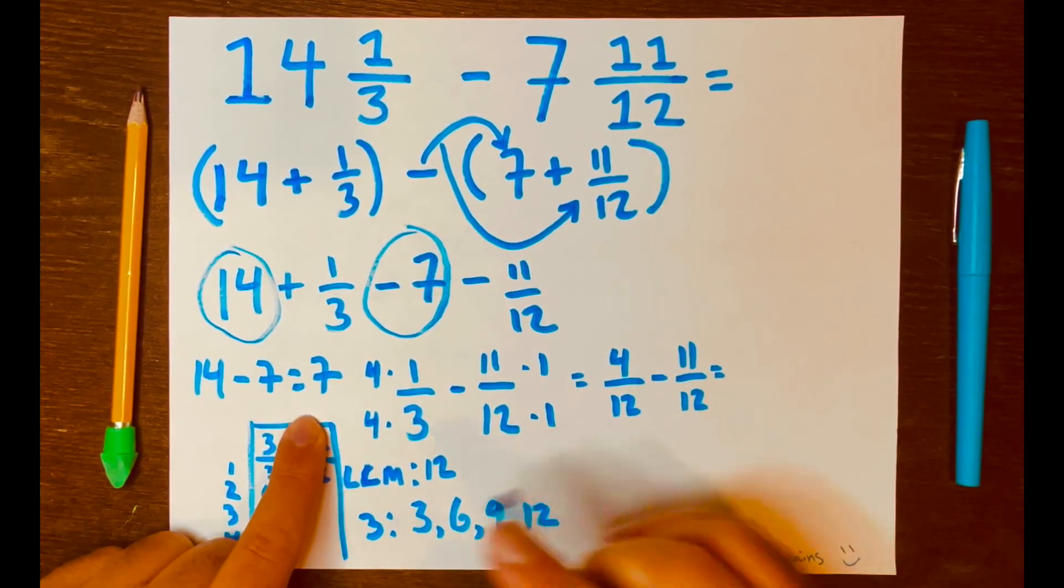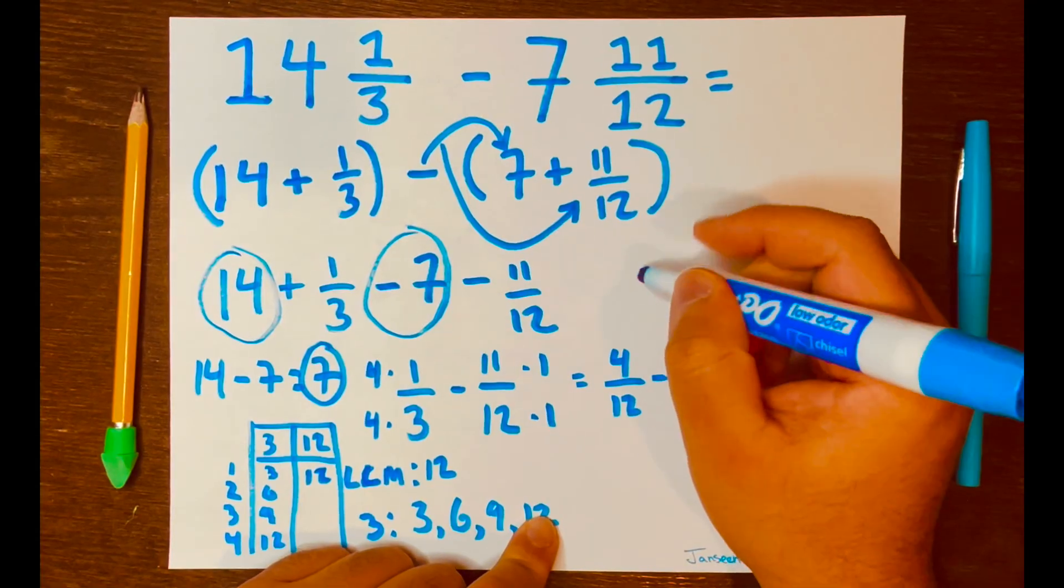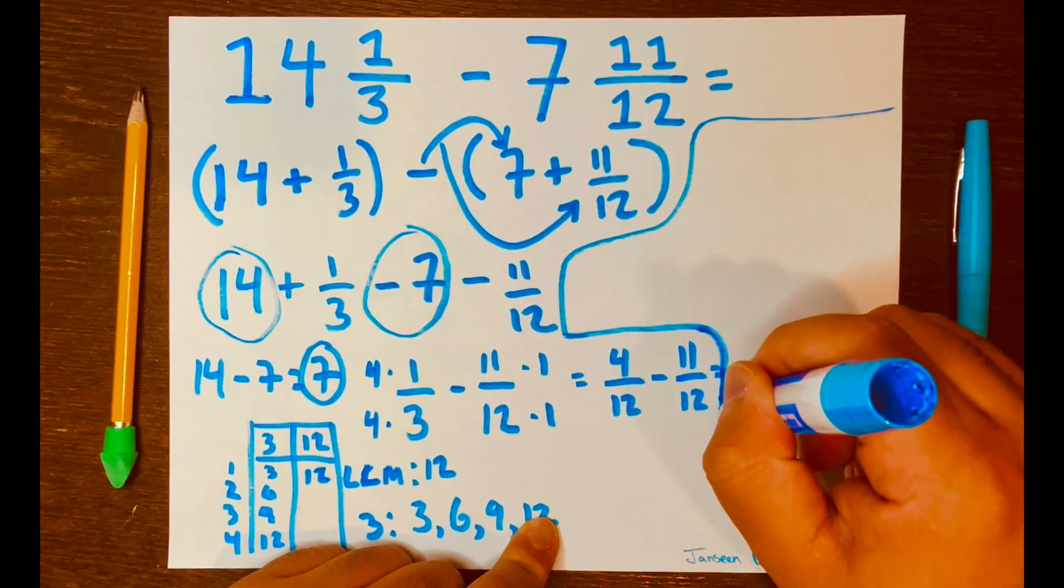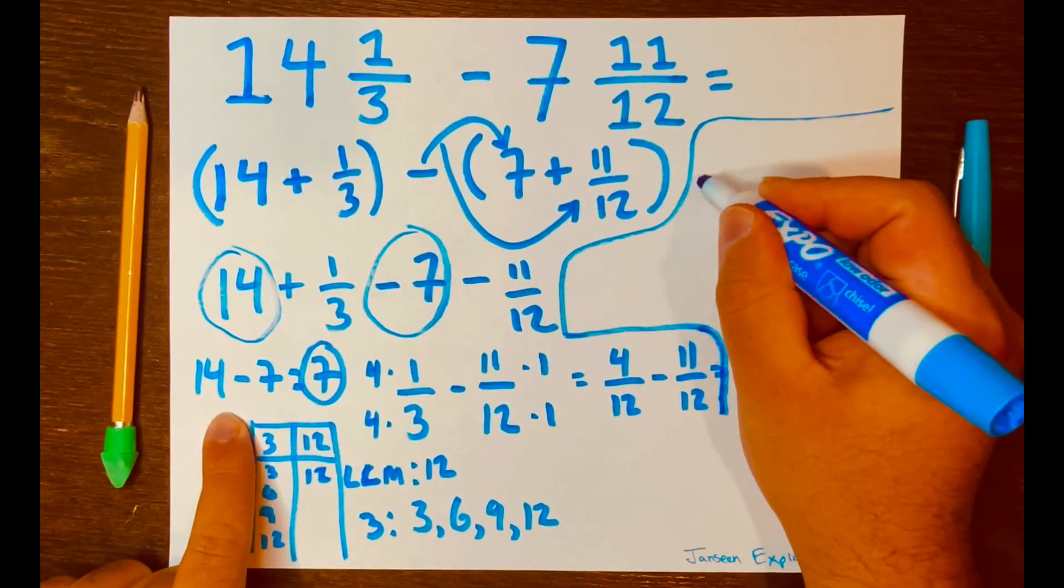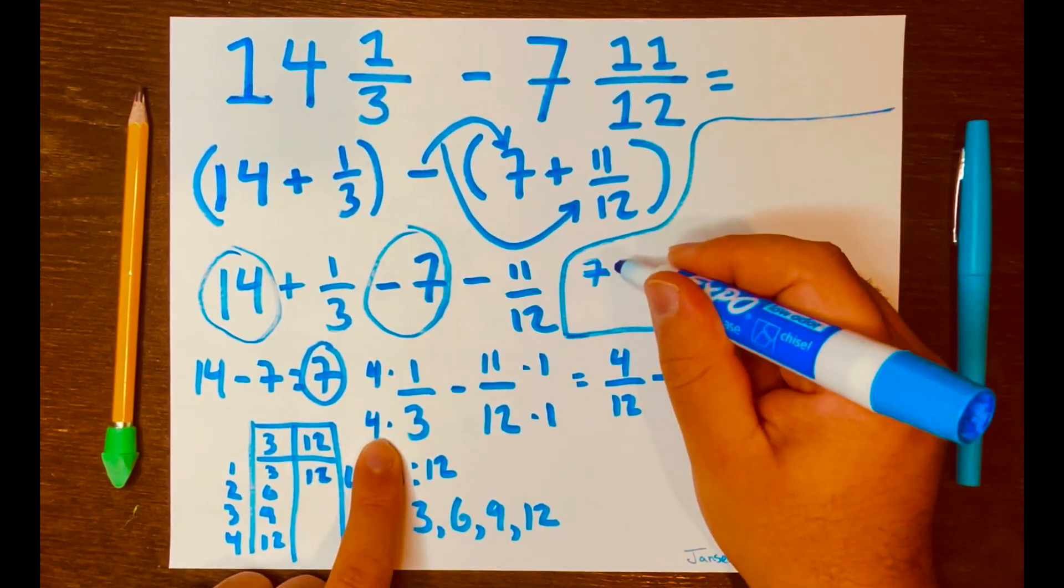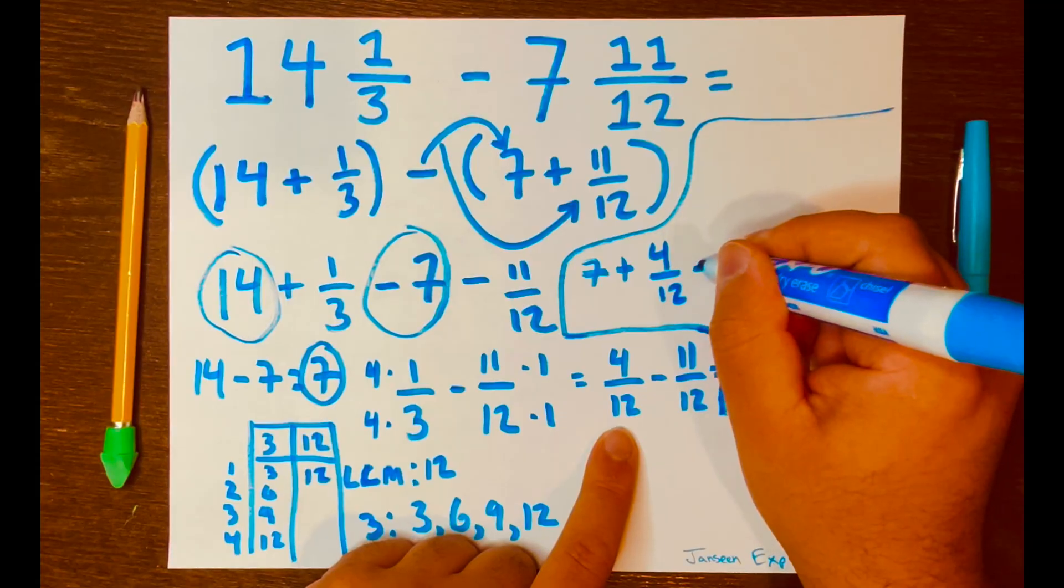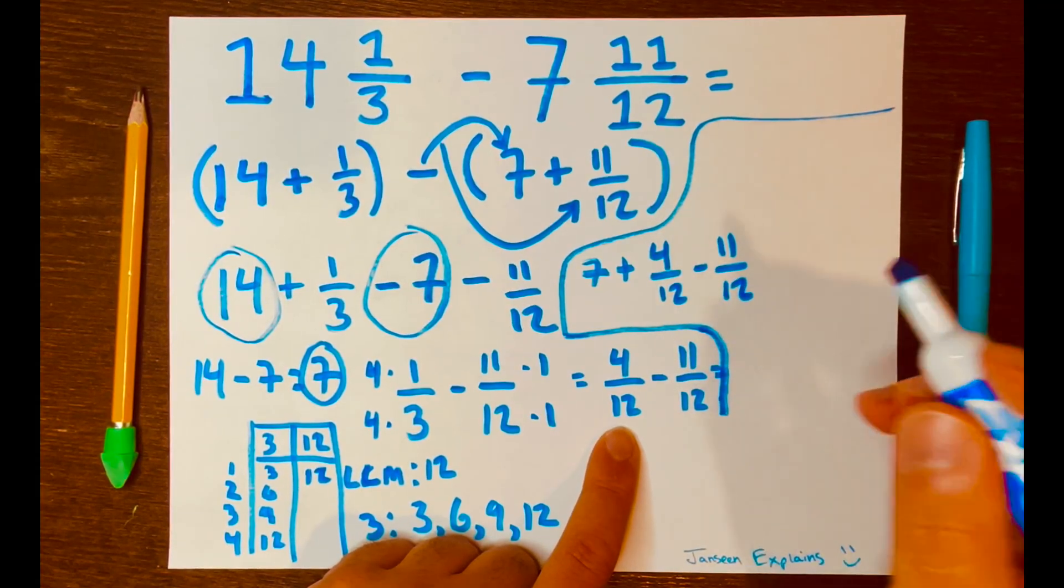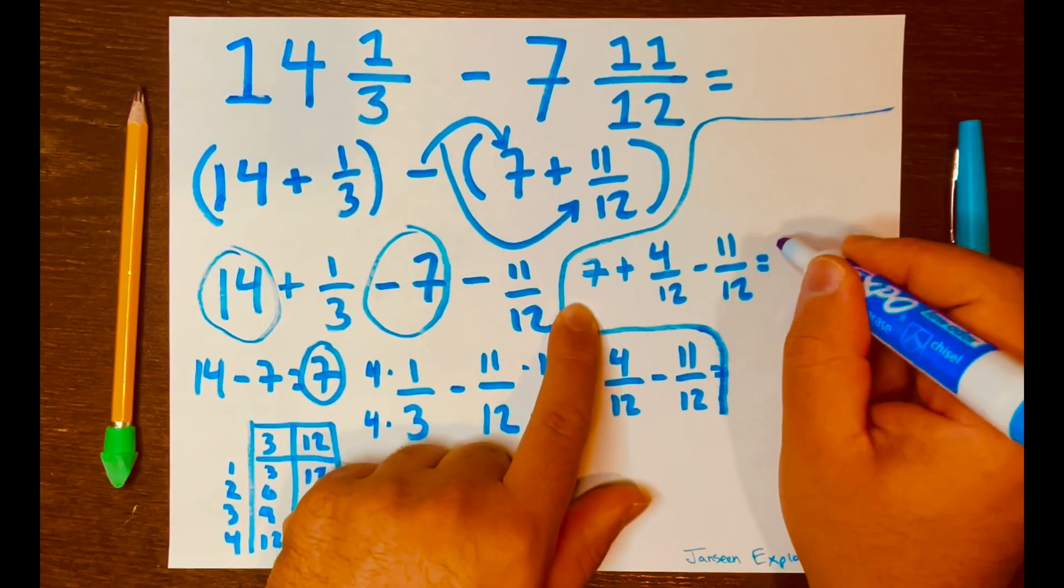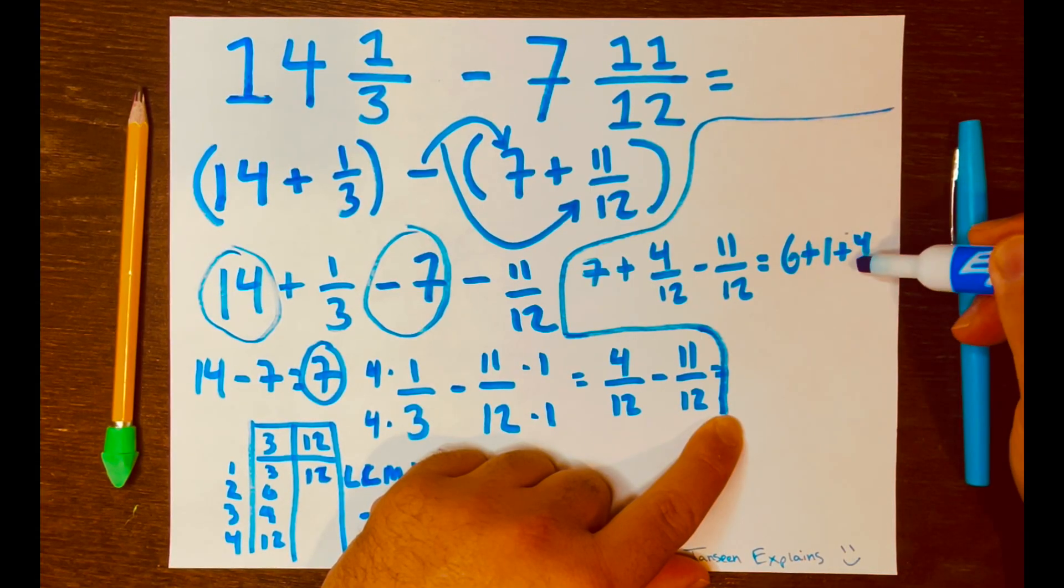We're going to borrow from this 7 here. And, we need some space. So, let me just write it here. Let me just make this space here just for that. So, I'm going to write it like this 7 plus 4 over 12 minus 11 over 12, just like that. And, we're going to borrow a 1 from this. So, it will be 6 plus 1, and then plus 4 over 12.